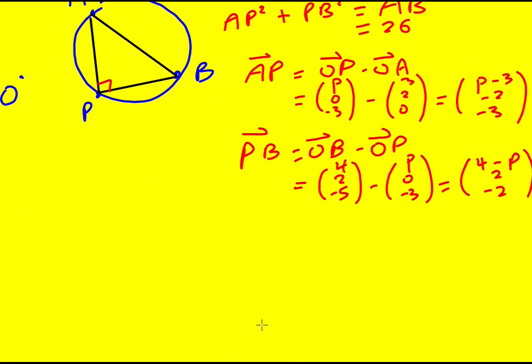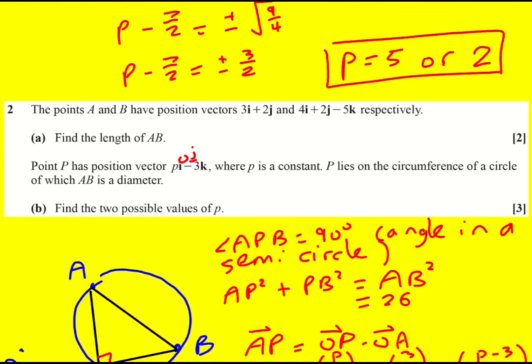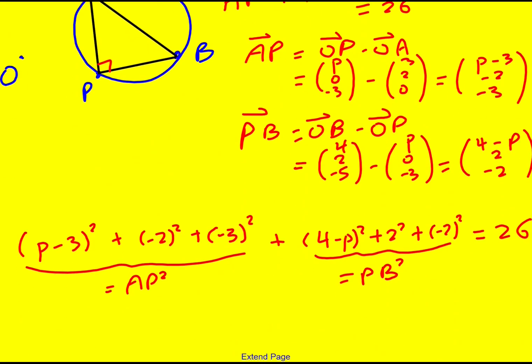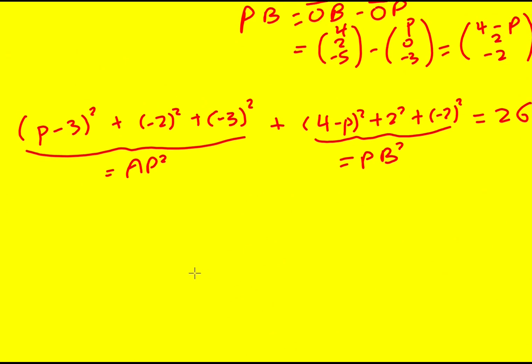So then AP squared, I can just do my 3D Pythagoras as I've talked about before, p minus 3 squared, plus minus 2 squared, plus minus 3 squared. Plus 4 minus p squared, plus 2 squared, plus minus 2 squared. That is PB squared. And that's going to equal 26. If we haven't had to deal with the vectors as much, I don't know. There's a lot to do here, because whilst I could use the idea of completing the square to solve this one quickly, here I've got to expand loads of brackets now. So p squared minus 6p, plus 9, expanding that first double bracket, plus 4, plus 9, plus 16, minus 8p, plus p squared, plus 4, plus 4, is 26.